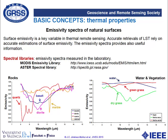Surface emissivity is a key variable in thermal remote sensing because accurate retrievals of surface temperature rely on accurate estimation of surface emissivity. Here we show examples of emissivity spectra for different surfaces extracted from spectral libraries, which include emissivity spectra for various surfaces measured in the laboratory. Maybe the most used are the MODIS and ASTER spectral libraries.